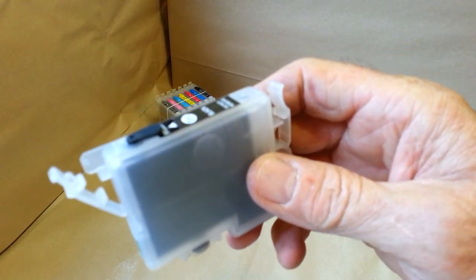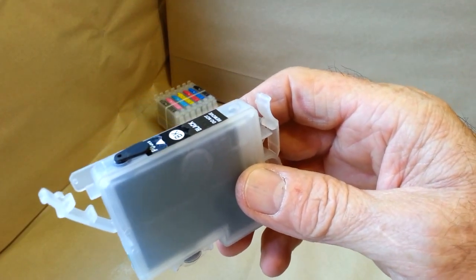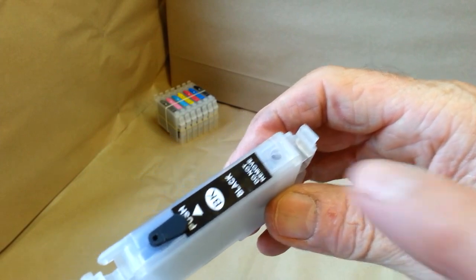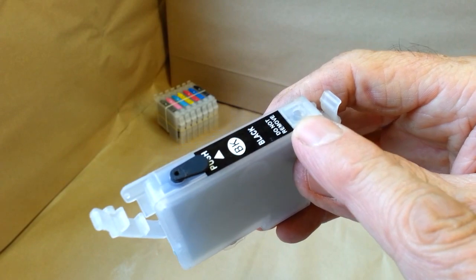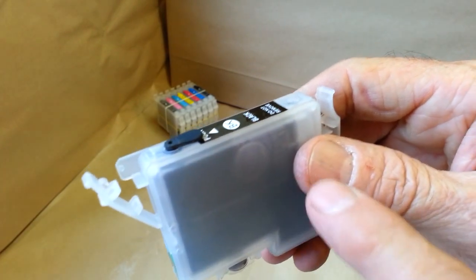You can now go ahead and install this cartridge into the printer. The vent hole is open which is very important, that must be done before priming, and then you can go ahead and install this one.